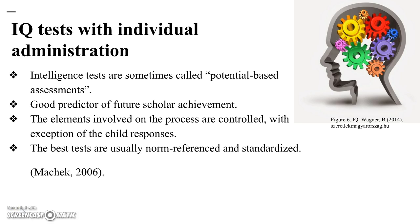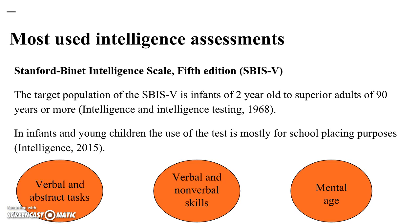Potential-based assessments or individually administered IQ tests are good predictors of future scholastic achievement. They are standardized tests designed to control all elements of the testing process except the child's responses. One of the most used assessments is the Stanford-Binet Intelligence Scale, 5th Edition. The test is organized by age level from 2 years old to 90 years or more, composed of verbal and abstract tasks arranged from easy to difficult. It is divided into four cognitive areas: verbal reasoning, quantitative reasoning, abstract or visual reasoning, and short-term memory.